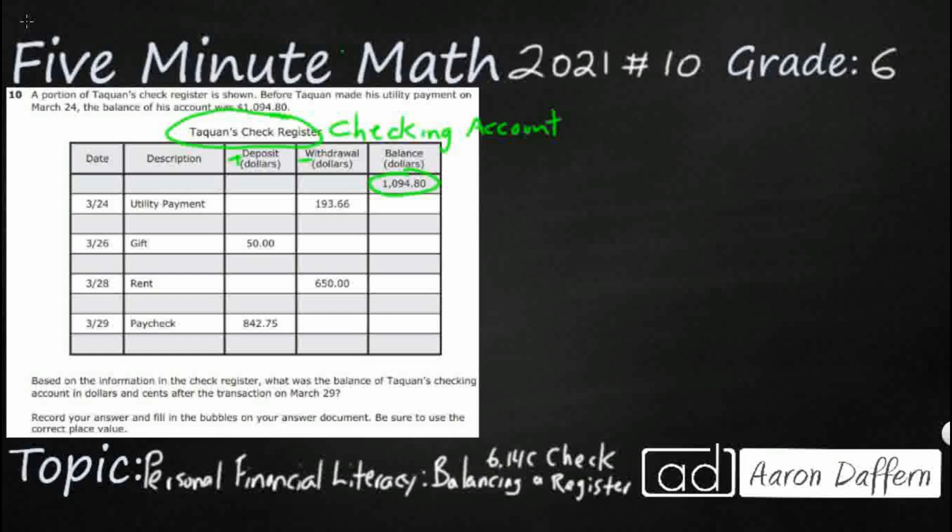So we're literally just going to do a little bit of addition and subtraction. This first withdrawal for the utility payment is $193.66. All we need to do is keep track of whether it's going to be an add or subtract. In this case, a withdrawal, when you're making a payment, is going to be taking that money away. So $80 minus $66, that's going to be $14. And that's going to be 4 minus 3 is 1, 9 minus 9 is 0, and then 10 minus 1 is 9. So he paid $193.66, and he came away with $901.14.